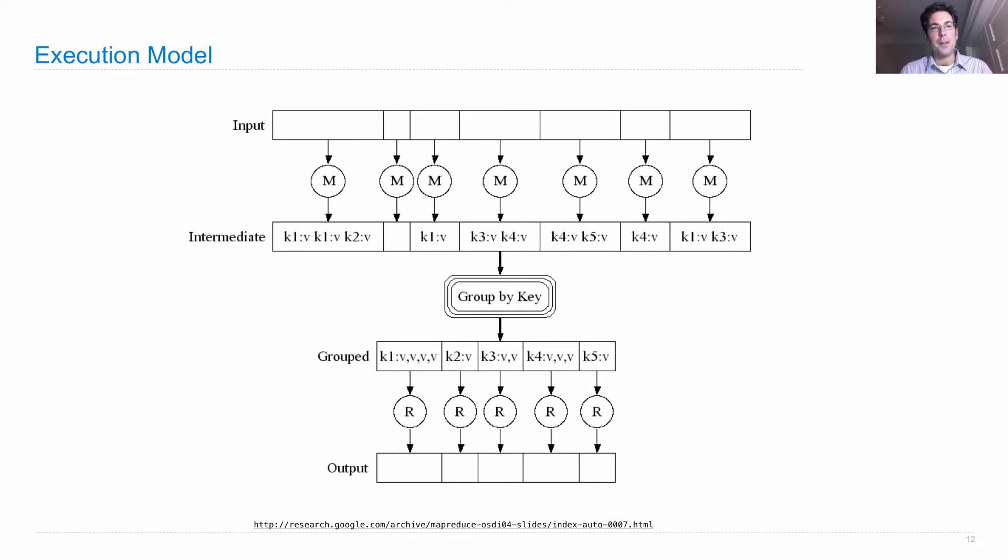Then all of these intermediate key-value pairs are grouped by key, meaning all the values with the same key are grouped together. That's why we see this grouped layer as the third level of data in this pipeline. And then the reducer is applied to each of these.